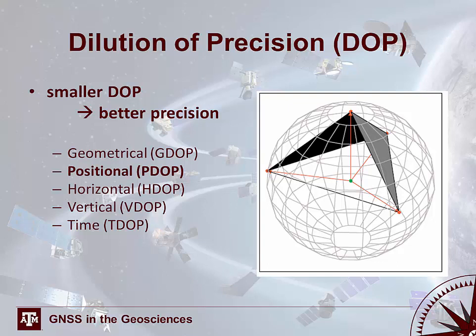The smaller the dilution of precision value, the better the precision — lower number equals better precision. There are several types: PDOP is positional dilution of precision; GDOP is geometrical; HDOP is horizontal; VDOP is vertical; and TDOP is time dilution of precision. We'll primarily focus on PDOP, as it incorporates several other DOP measures and is most useful for survey design.